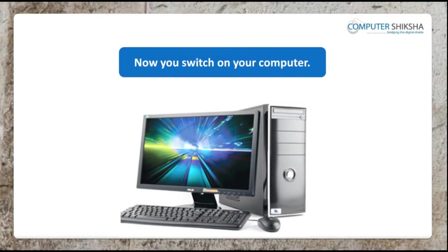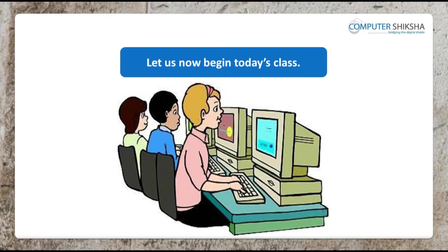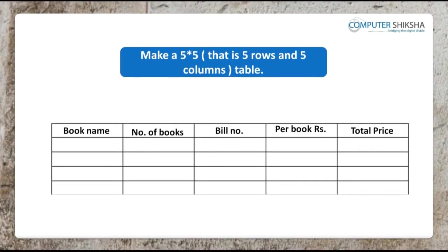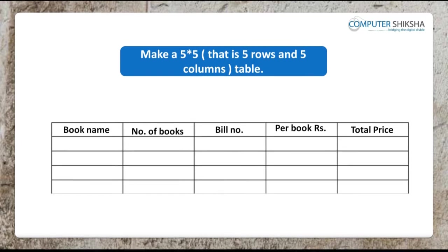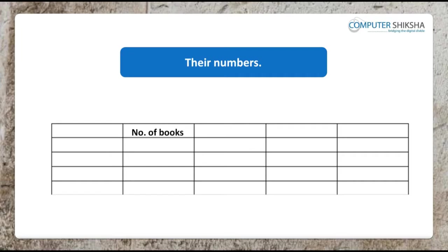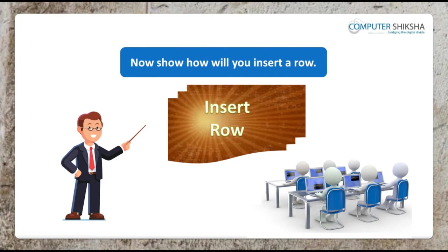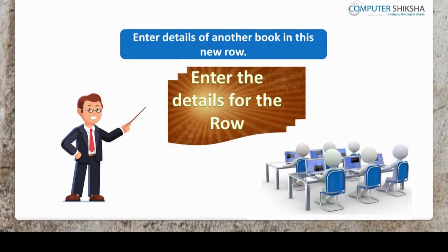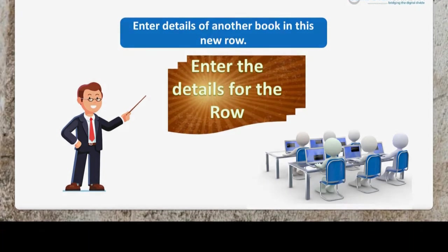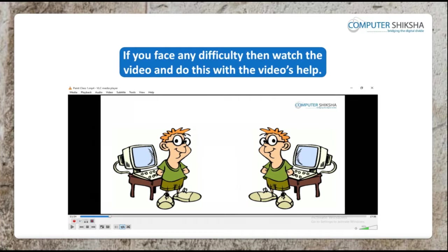Now all of you switch on your computers and open the writer file. Let us now begin today's class. Make a 5 by 5, that is 5 rows and 5 columns table, which has details of books like name of the book, the numbers and price. Have you all made the table? Now show how you will insert a row. Enter details of another book in this new row. If you face any difficulty, then watch the video and do this with the video's help.